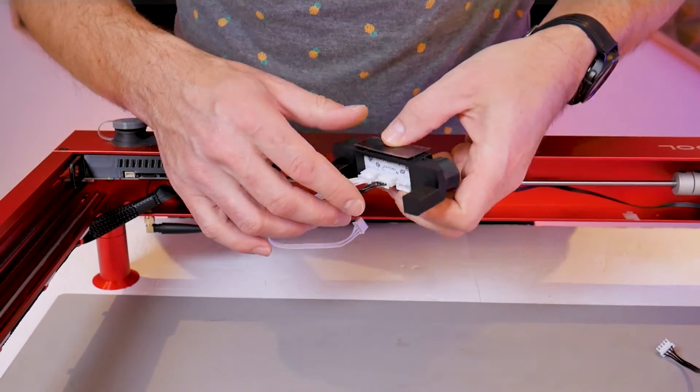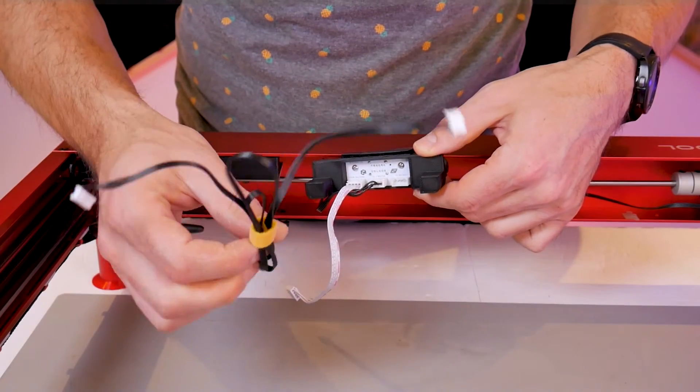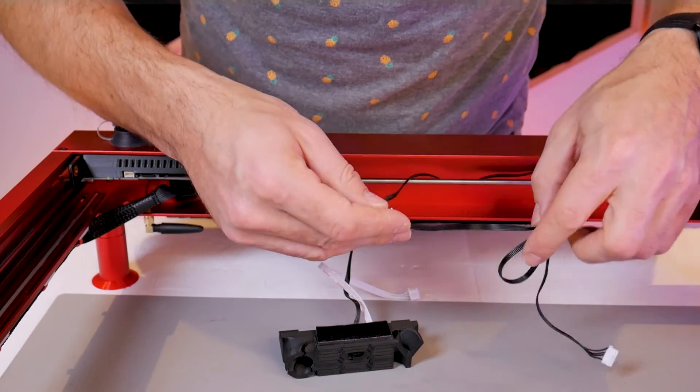Next you can grab the cable that comes with the RA2. It has a four pin end and a six pin end. Just as we did with the Y motor cable, we're going to route this one behind the Y motor shaft as well.